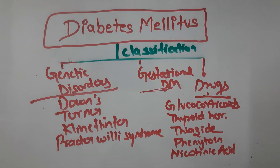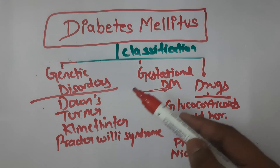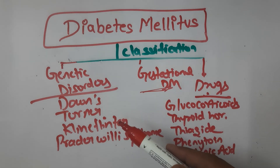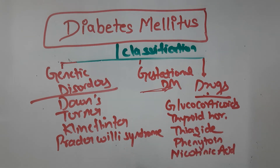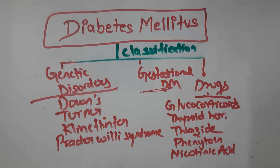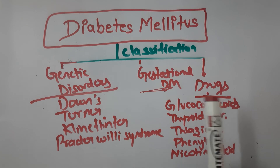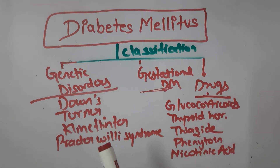Drugs that can cause diabetes mellitus include glucocorticoids, thyroid hormone, thiazides, phenytoin, and nicotinic acid. Genetic disorders associated with diabetes include Down syndrome, Turner syndrome, Klinefelter syndrome, and Prader-Willi syndrome. This covers the full classification of diabetes mellitus.